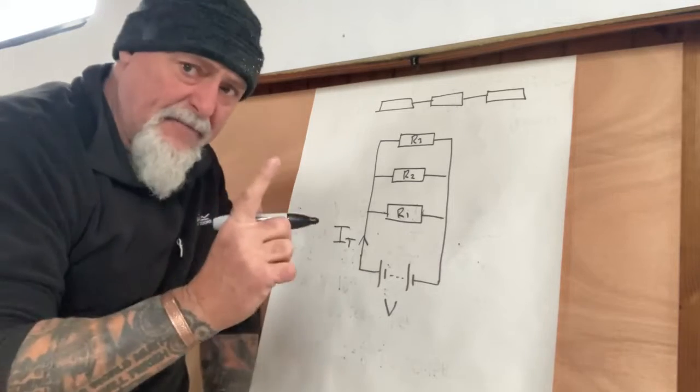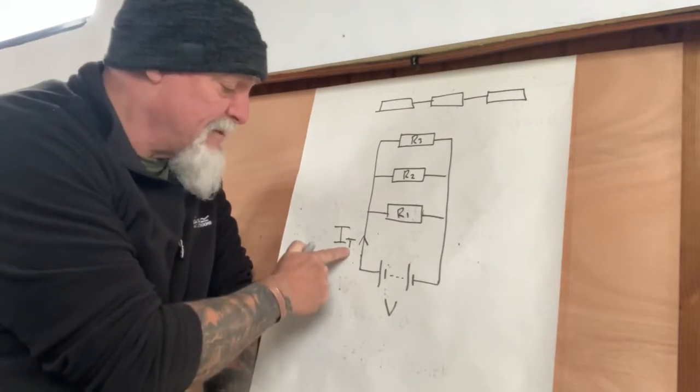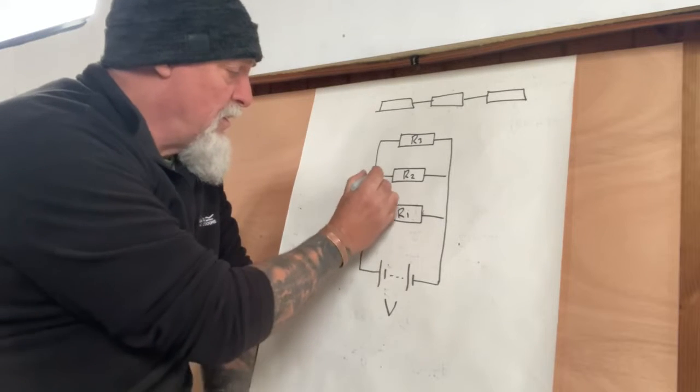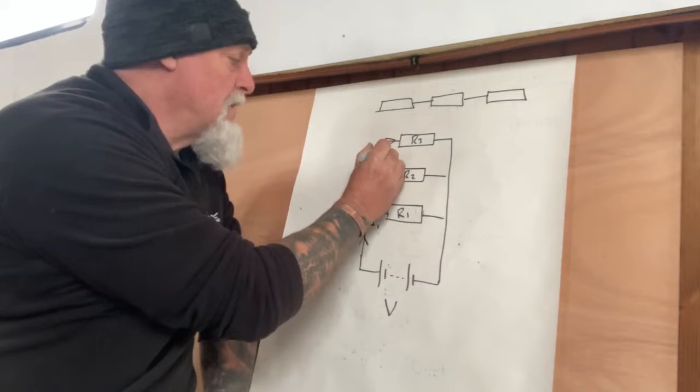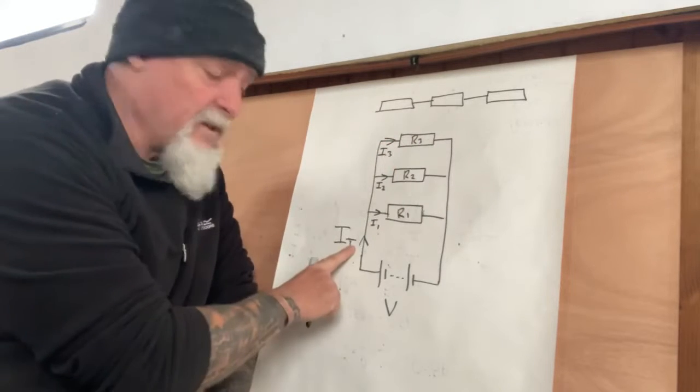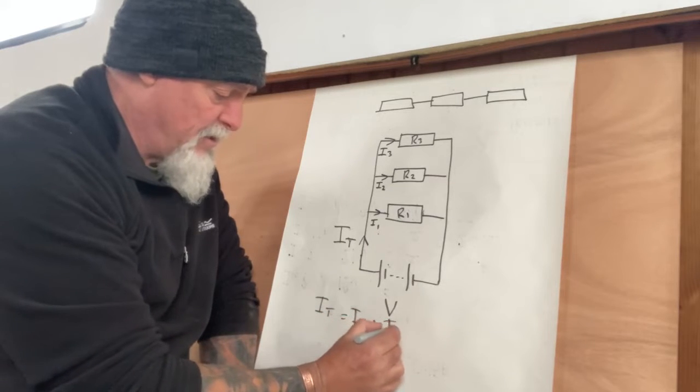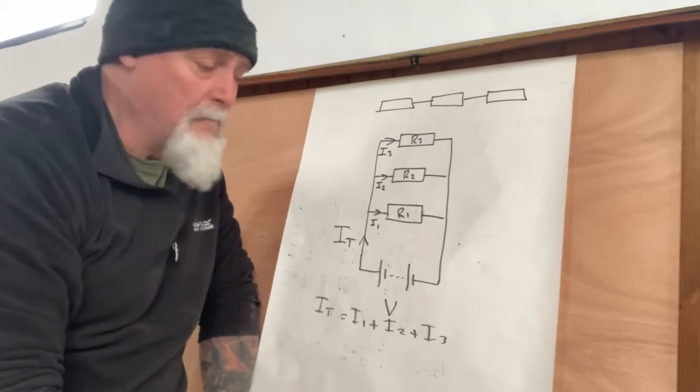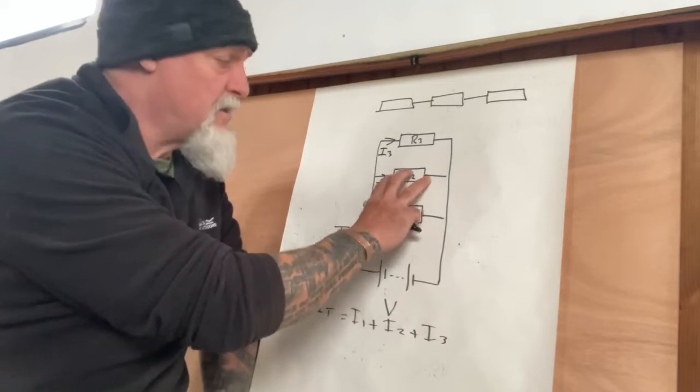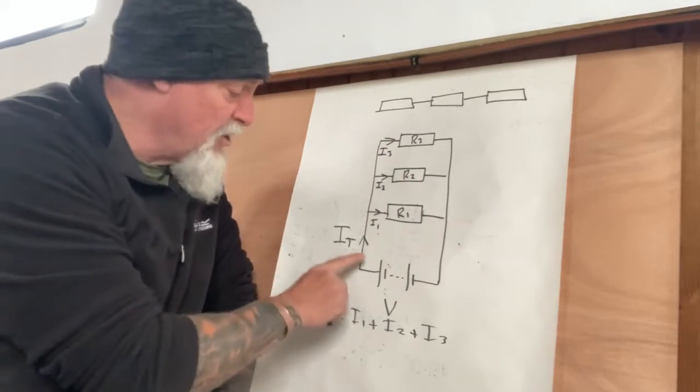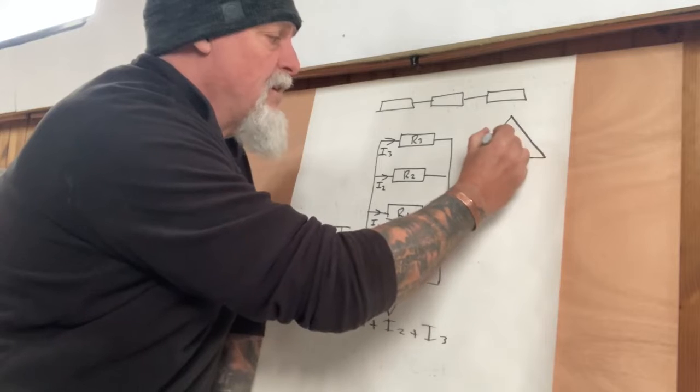We have voltage and we have a current. Now the current in this place here is going to be IT, total current, where differing from a series circuit, where the current flows all the way through and is common. In a parallel circuit it's not. Here is the total, and then here will be I1. So the current in that arm, there'll be current flowing in this arm and a current flowing in the R3 arm, which will equal the total. So total current is just I1 plus I2 plus I3. It's as simple as that.